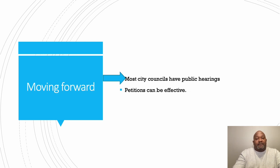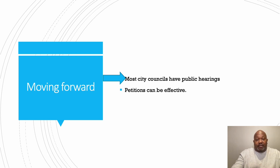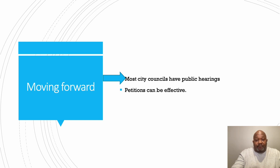Moving forward, if something is going on in your area — whether crime, disrepaired streets, or education — most city councils have public hearings. Because council members are elected from districts within the city, they're going to be more responsive to people showing up and voicing their opinions. Petitions can also be more effective at this local level than at the national or federal level. The things city governments do and pass are going to affect your life much more directly and impactfully.